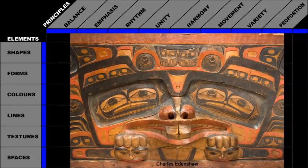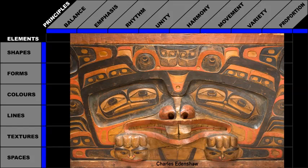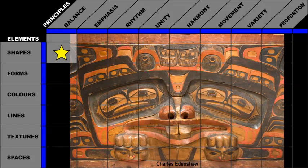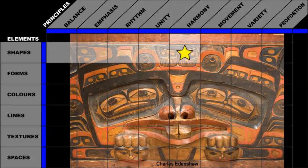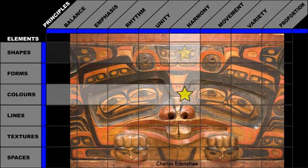Let's take a look at how Charles Edenshaw used elements and principles of design in his traditional Haida carving. The artist balanced the shapes with formal symmetrical balance. He used harmonious rounded shapes that are similar. The artist used harmonious colors.